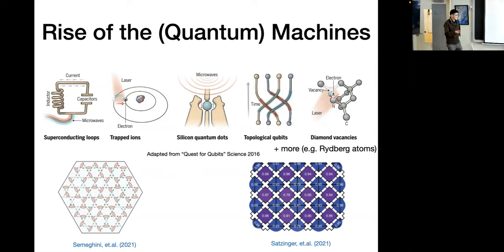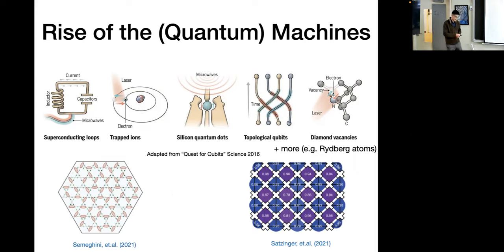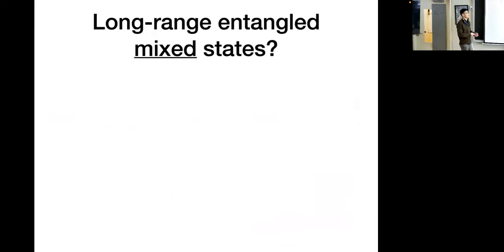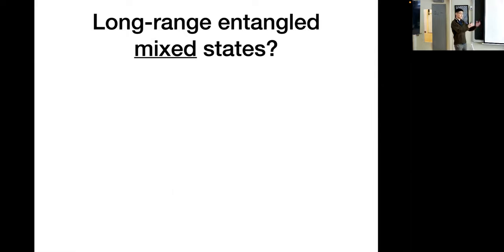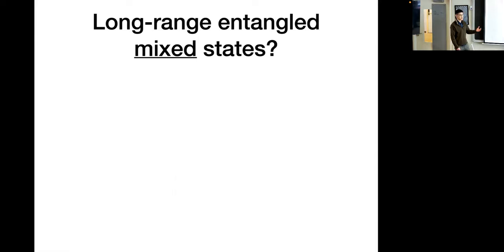However, one has to keep in mind that these are still open quantum systems. We still have to struggle against coupling to the environment, noise, and decoherence. This really begs the question: how do we think of long-range entanglement in mixed states? These are, after all, mixed states being achieved in a realistic experiment. So how do we characterize long-range entanglement in mixed states, and how do we realize non-trivial instances of long-range entangled mixed states?